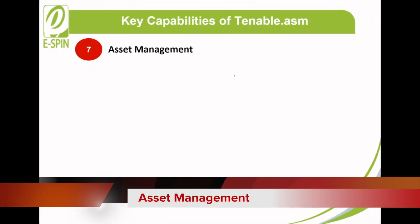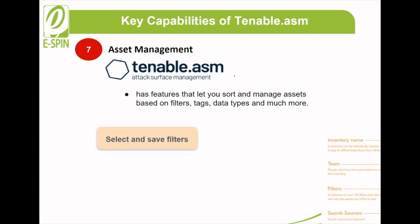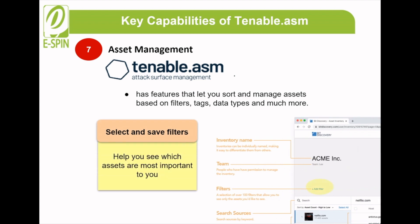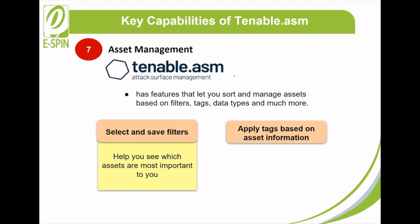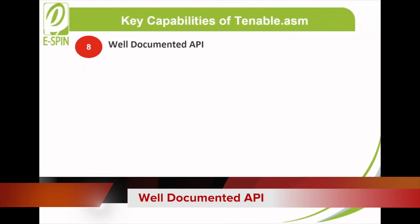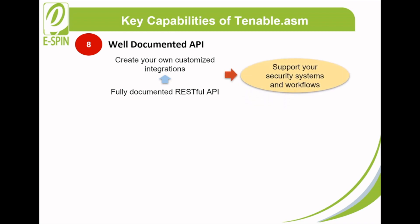Asset management: Tenable ASM offers various features that let you sort and manage assets based on filters, text, data types, and much more. Select and save filters help you see which assets are most important to you, and applying text based on asset information allows you to streamline asset management. Well-documented API: Tenable ASM enables you to create your own customized integrations by leveraging a fully documented RESTful API to support your security systems and workflows.